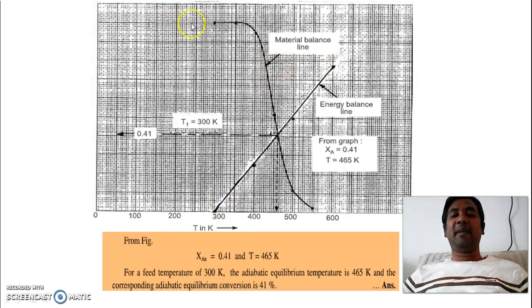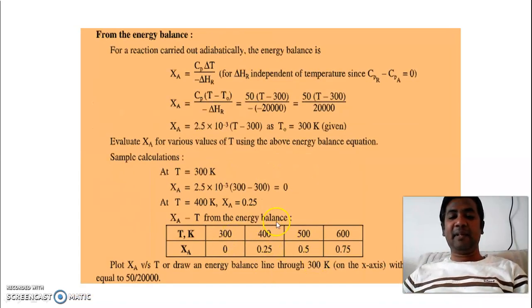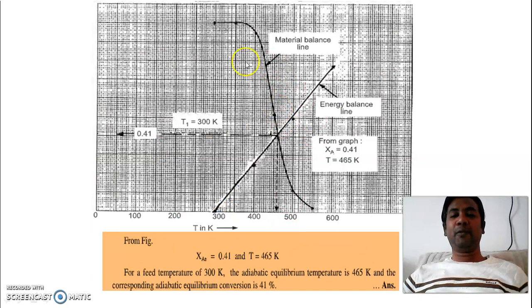And our material balance line is we have plot using our previous table. This is the table. This is for material balance and this is for energy balance. So these two graphs are included in the same graph. In a single paper, you have plotted the two graphs, material balance and energy balance line.